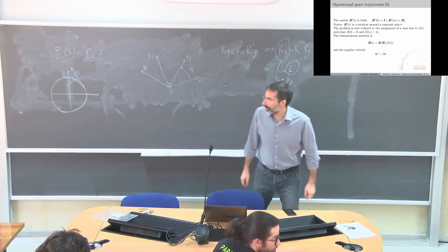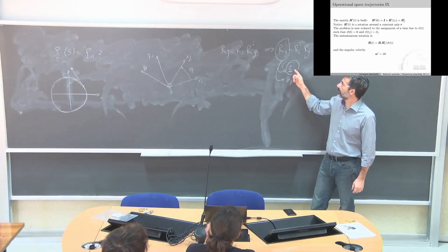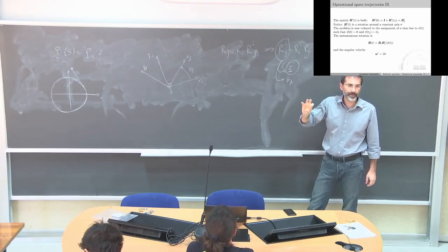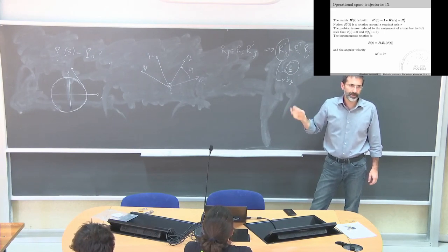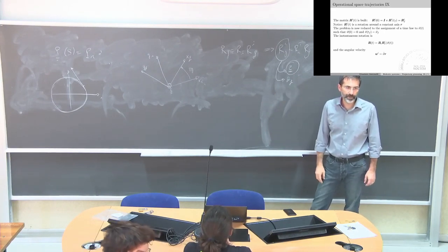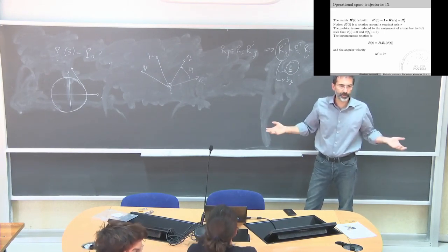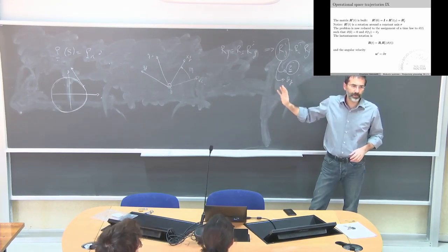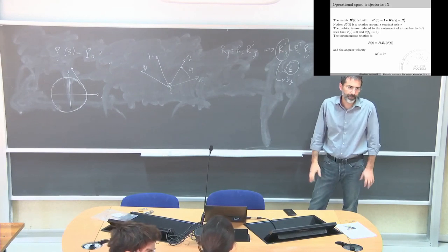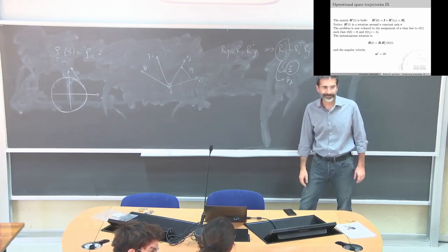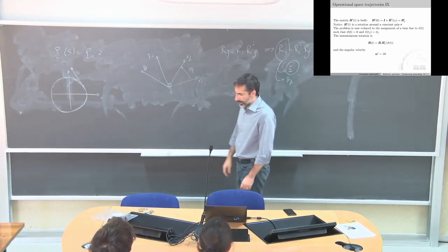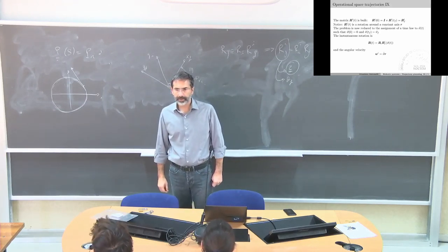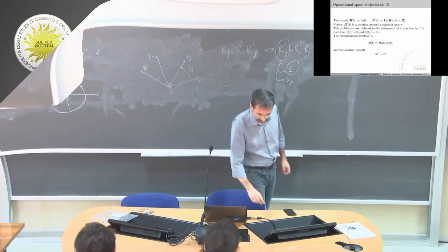Axis-angle is the easiest approach because you already know the axis around which you want to rotate, and then you have the rotation matrix. No need to go through other representations. Any questions? Have a nice weekend and see you Monday.